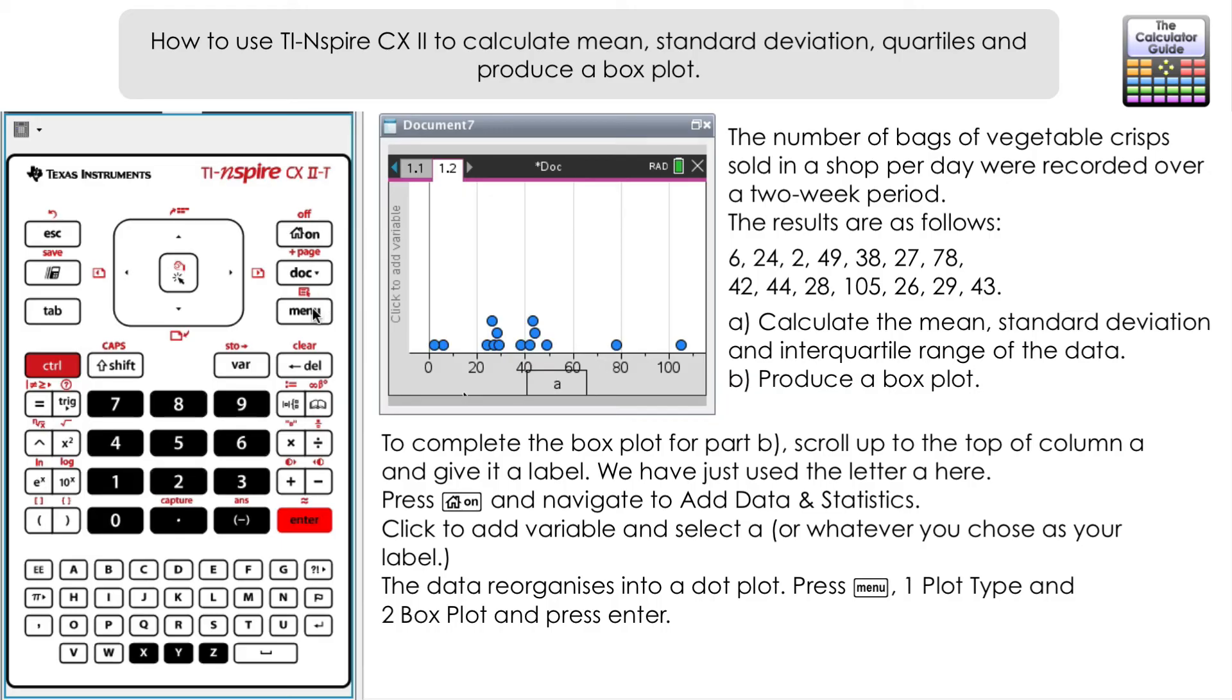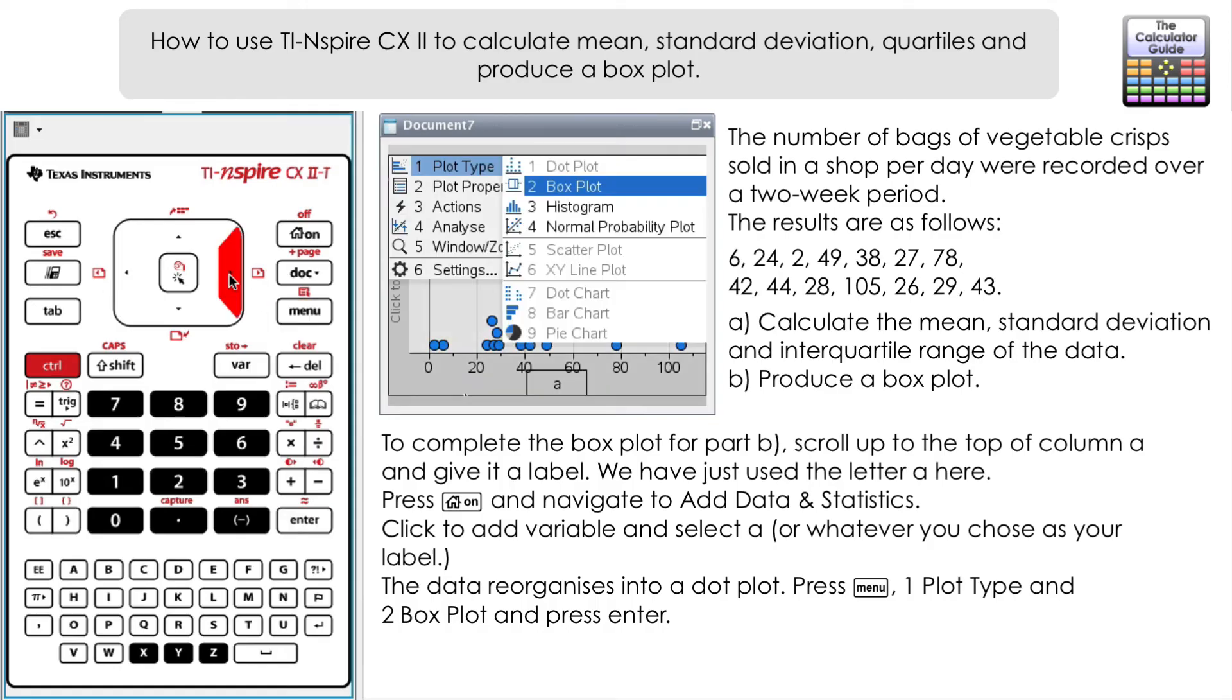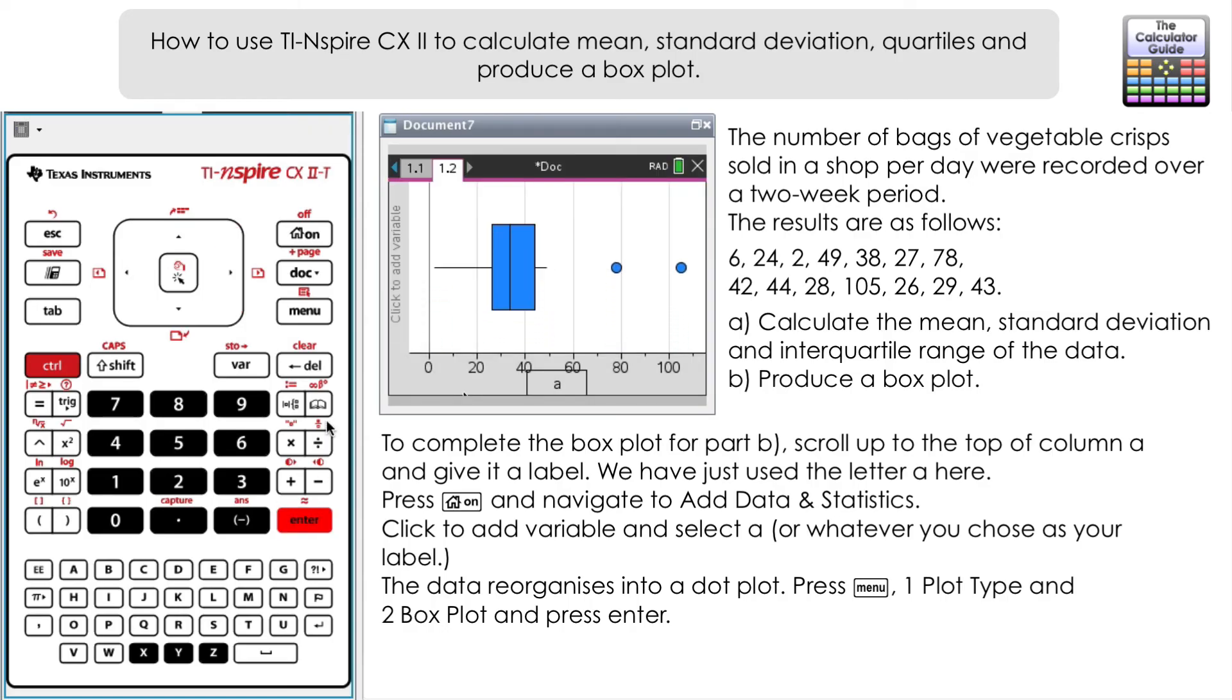The data has been organized into a dot plot there showing the spread of data. We're just going to change that to a box plot. If you press Menu, Plot Type at the top there, option 1, press right, and we've got a few different choices. We're just going to choose 2, Box Plots, and press enter.